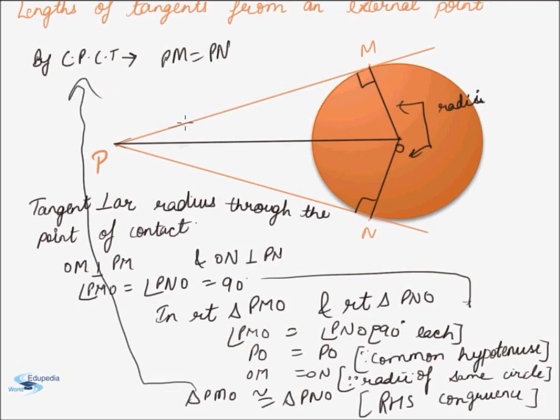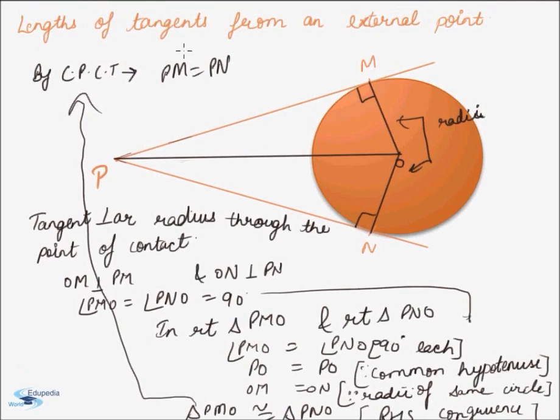Now, PM and PN are lengths of tangents from the external point P. Thus, we can conclude that lengths of tangents from an external point to a circle are equal.